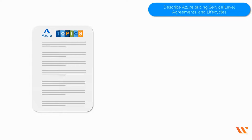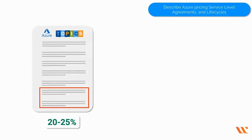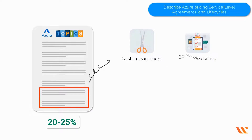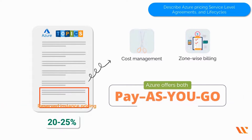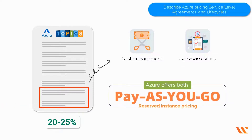Describe Azure pricing, service level agreements and life cycles: 20 to 25%. The majority of questions in this last portion will be based on Azure cost management and zone-wise billing. Azure offers both pay-as-you-go and reserved instance pricing with various pricing units for each service.